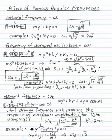For example, if you have 2y double prime plus 16y equals 0, omega naught is the square root of 16 over 2. The square root of 8 is 2 root 2.